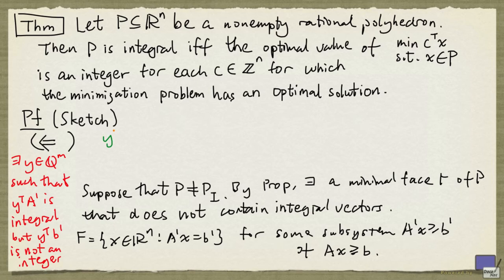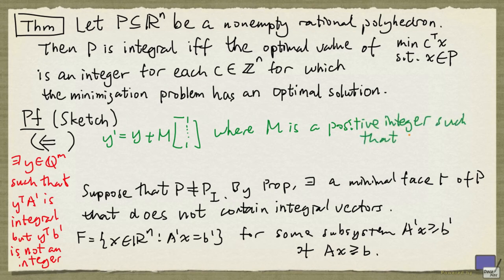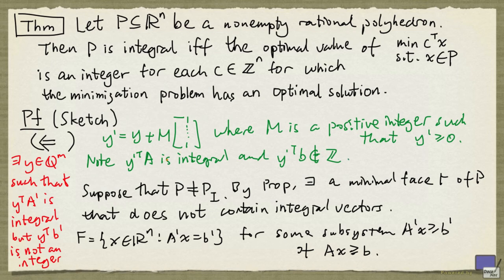Now let y' be y plus m times the vector of all ones, where m is a positive integer such that y' is non-negative. Notice that y' is integral and y' transpose b' is not an integer. That is because we assumed A and b to have only integer entries.